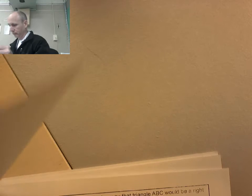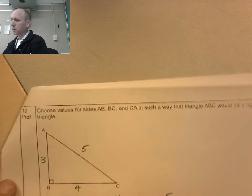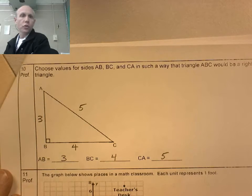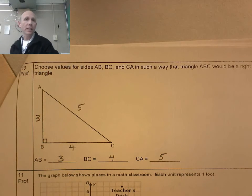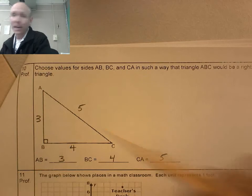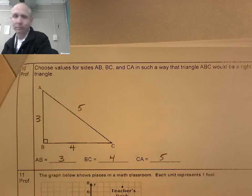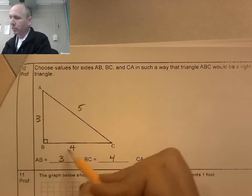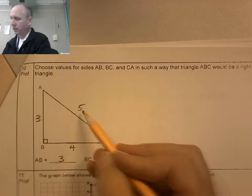That was number 9. I still have another 2 to go. This one says choose values in such a way that I get a right triangle. Well, the most popular right triangle is the 3, 4, 5 triangle. So I went with 3, 4, 5. That's 9 plus 16 equals 25. It worked.